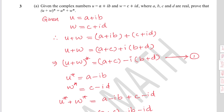Next is a complex numbers question. Given complex numbers U equals A plus iB and W equals C plus iD, where A, B, C, D are real, prove that the conjugate of U plus W equals the conjugate of U plus the conjugate of W.